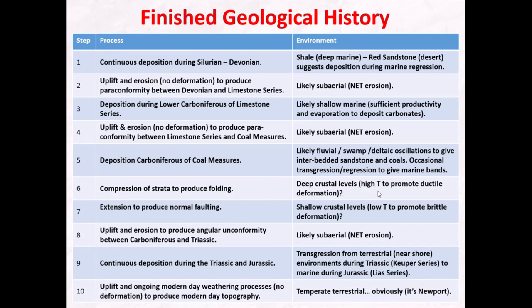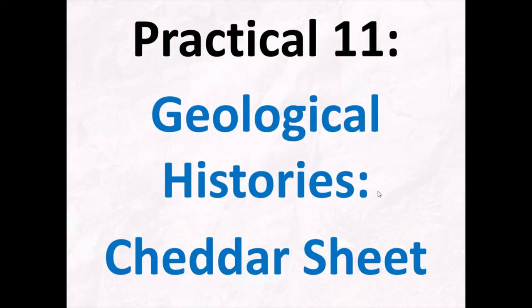In your assessment, you'll be asked to produce a geological history for an area — it really doesn't have to be a long expansive prose. It just needs to give us the bullet points for each of the events and then a sentence or two describing the environment in which that step in geological history happened. What I'd suggest you do now is move on to Practical 11, where we try to build a geological history together for the Cheddar Sheet. Thanks for listening, guys — I'll see you for the lab and then Lecture 12.